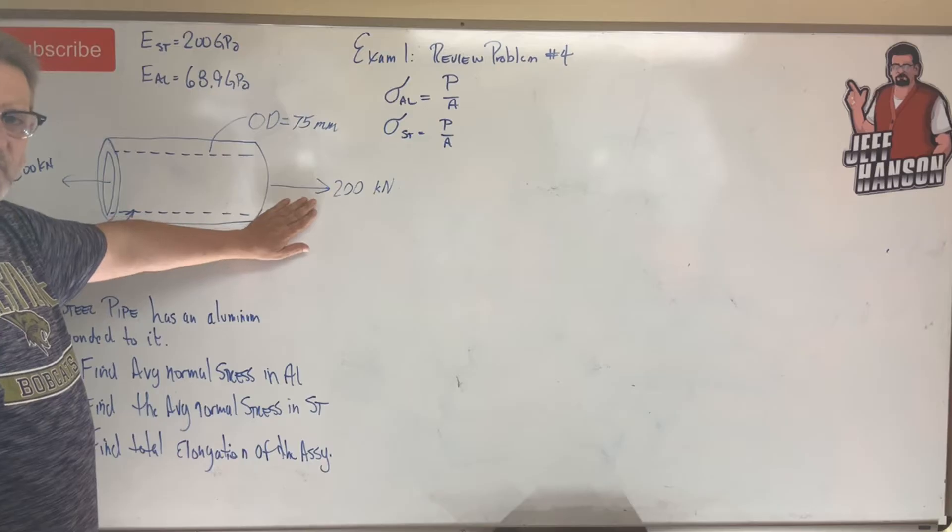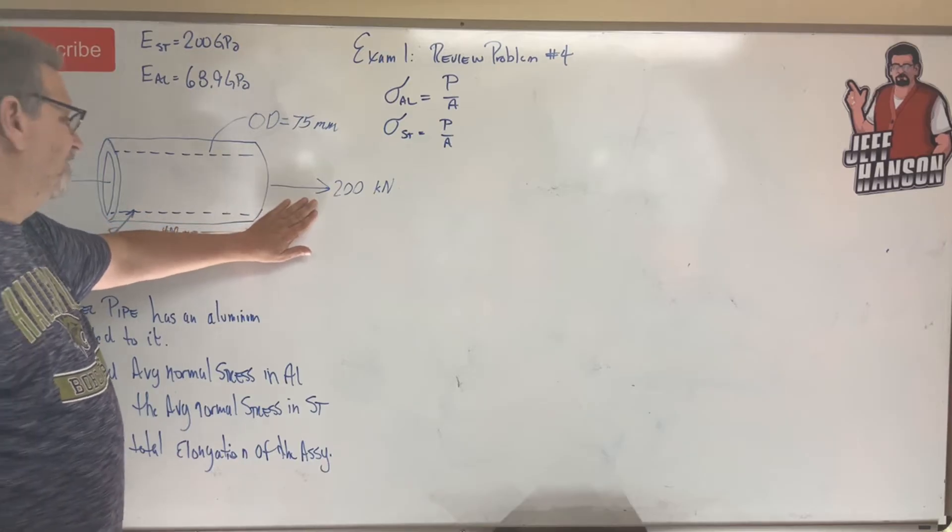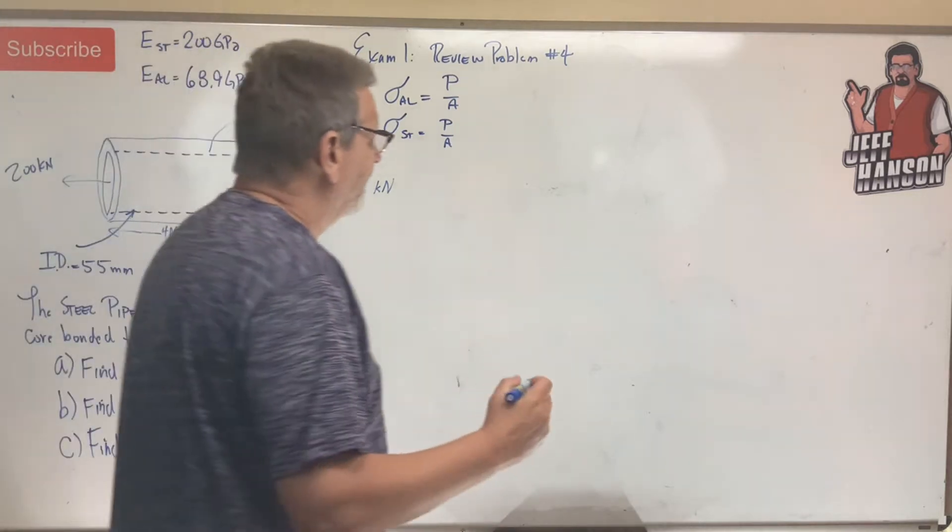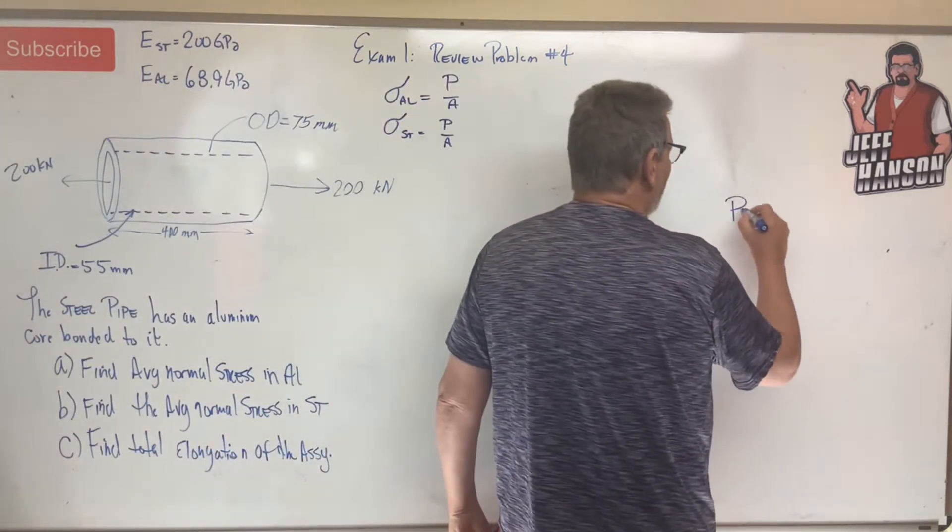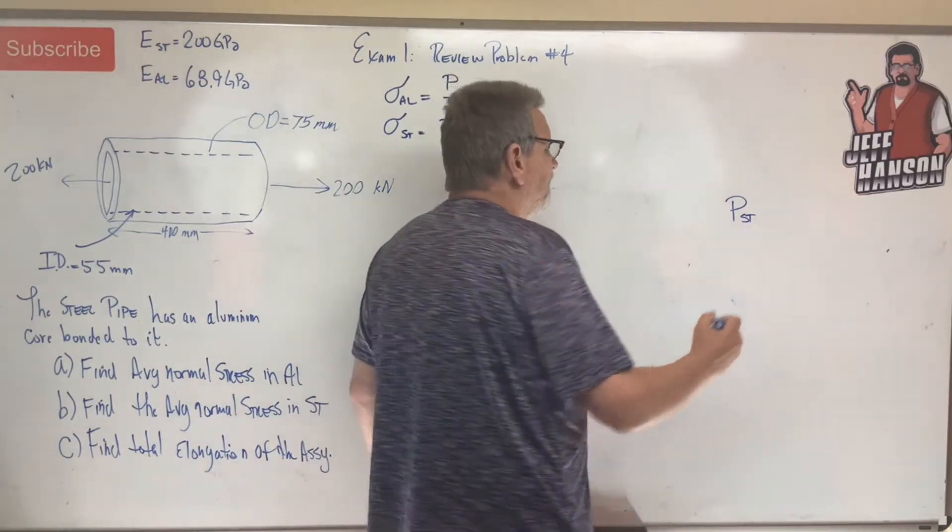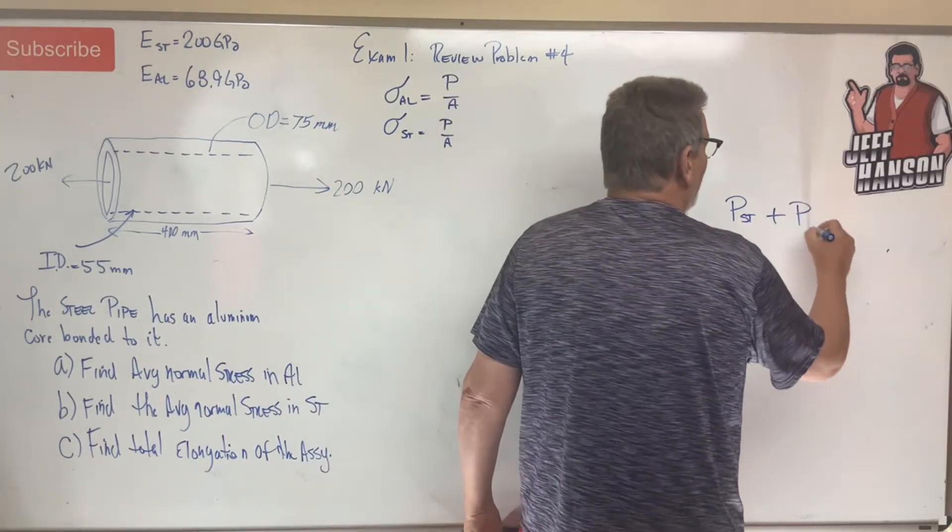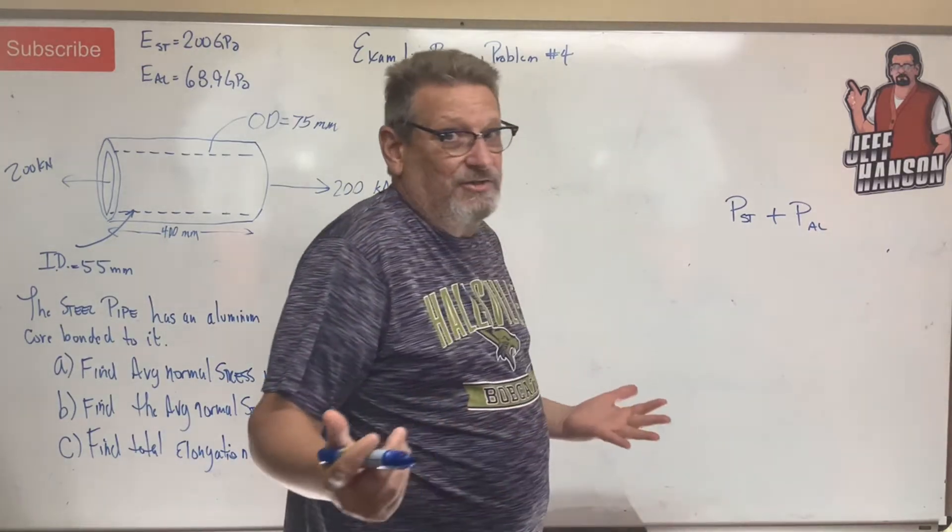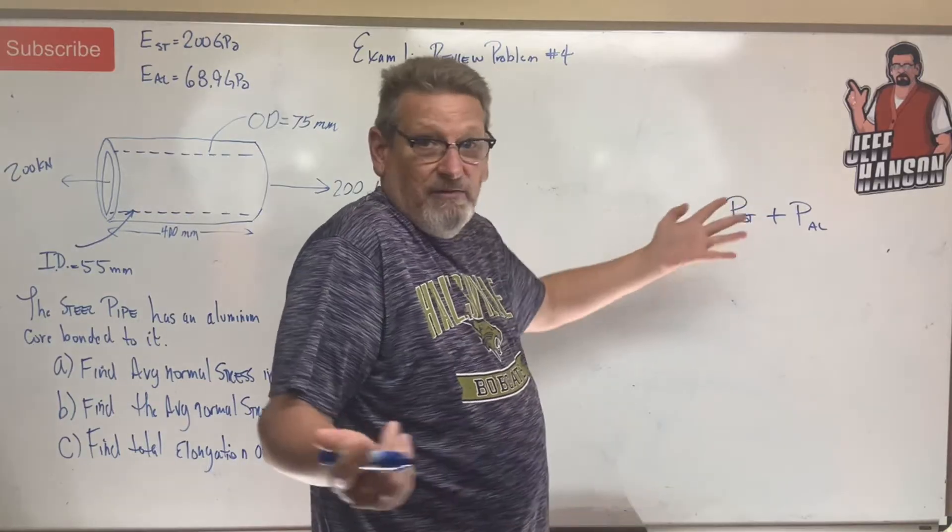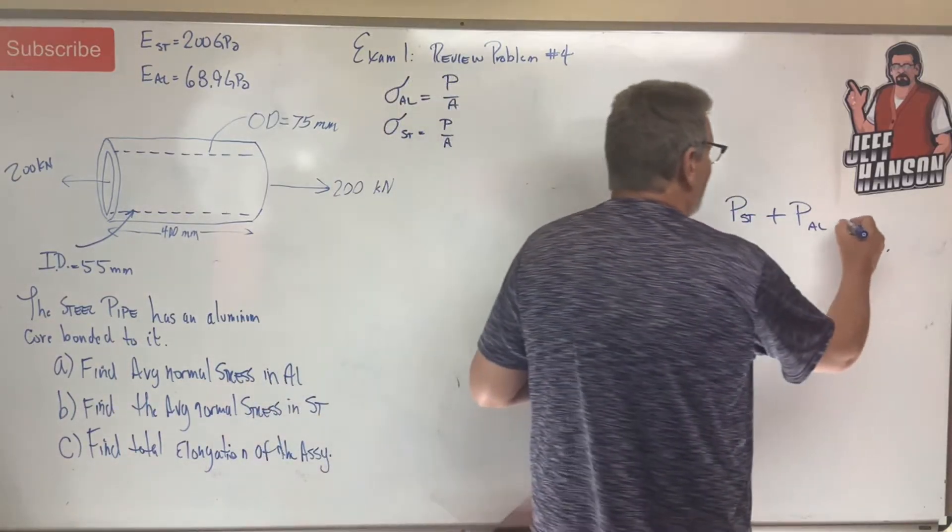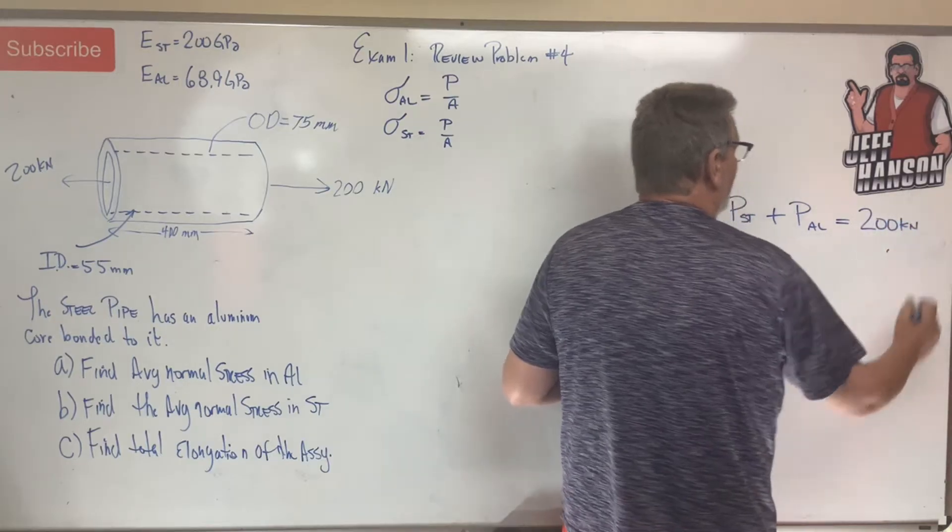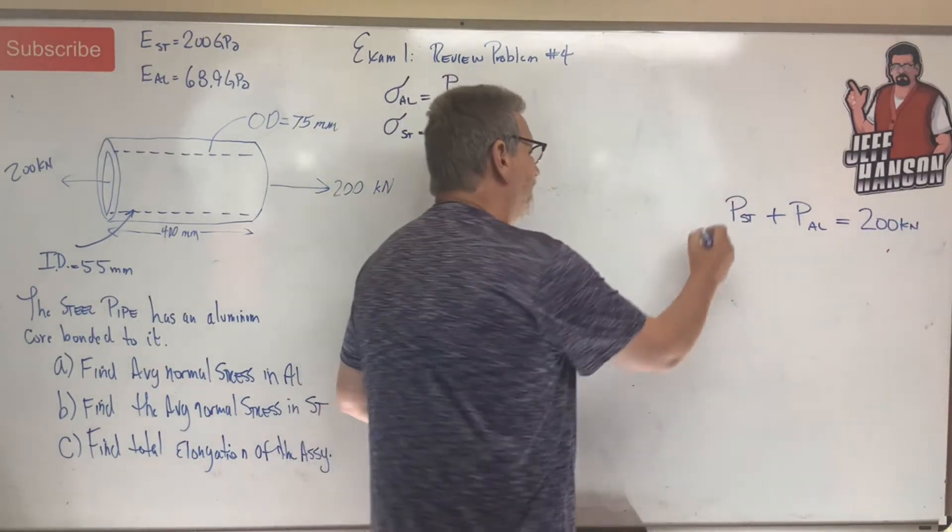Well that's just going to be P over A for aluminum and P over A for steel. I think that the P for the aluminum is different than the P steel, right? As a matter of fact, that's one of our compatibility equations. Of the 200 that's on the whole thing, what's happening? P steel, because the steel is carrying a little bit of the force, plus P aluminum, the aluminum is carrying a little bit of the force. I don't know how much, I don't know 50-50, I don't know 60-40, we're going to find out though. But I know that the total thing has to add up to 200 kilonewtons. That's compatibility equation number one.